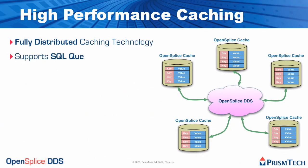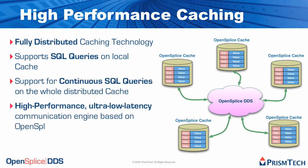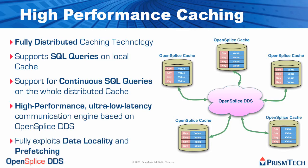Speaking of caching, OpenSplice DDS comes with a fully distributed caching technology that supports SQL queries on local cache and continuous SQL queries on the full distributed cache. It minimizes cache hit performance both for local cache hits and remote cache hits, because this caching technology leverages the ultra-low latency provided by the OpenSplice DDS messaging technology. In addition, the cache also provides a very sophisticated pre-fetching framework which can ensure that, if you know enough about your application, you can practically avoid misses — and avoiding misses is one of the key recipes for improving the performance of your application under caching.